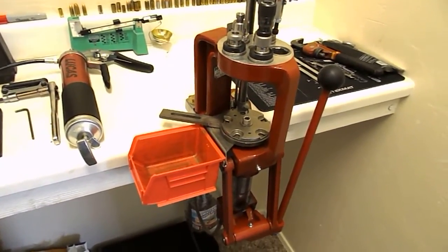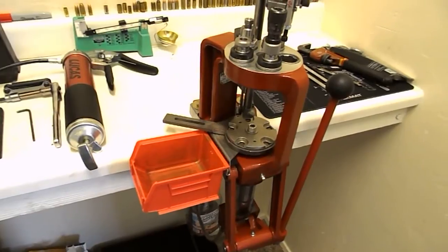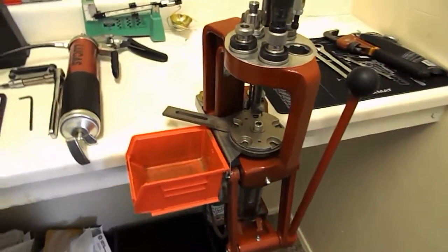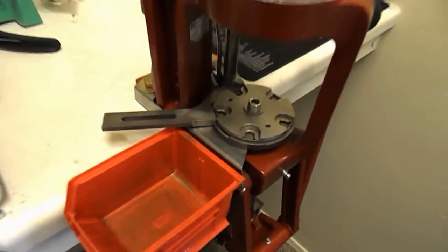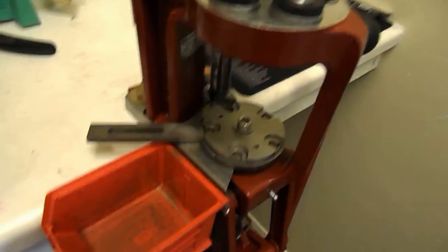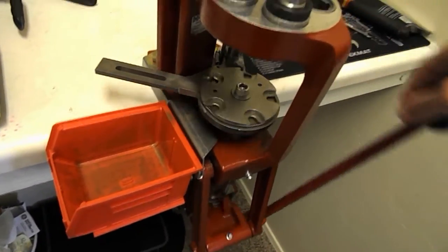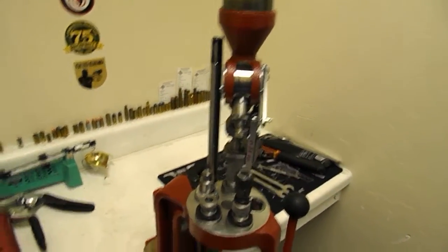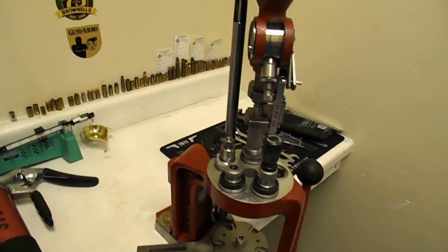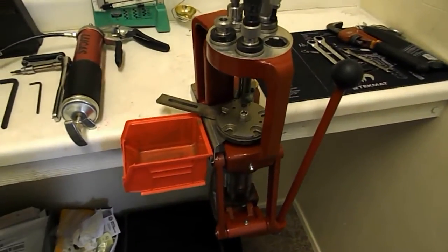This one is very similar to a Dillon 650. It's a five station press, it's got a shell plate right there, and drive system in the main shaft or main hub. It's got a case activated powder drop and all the goodies of the priming system, so fully progressive press.